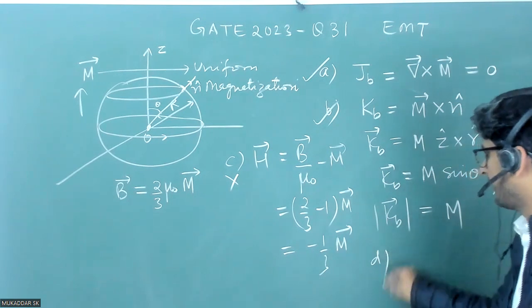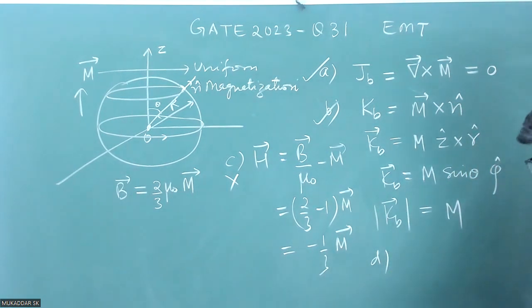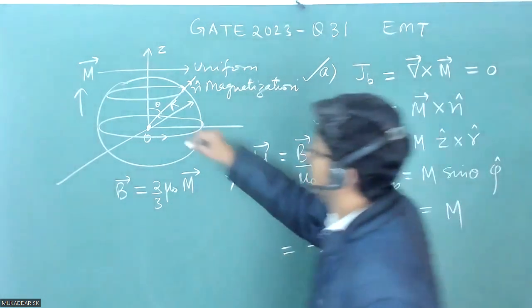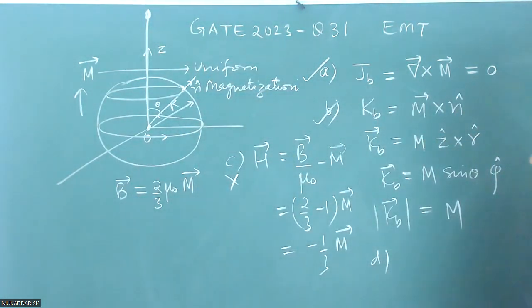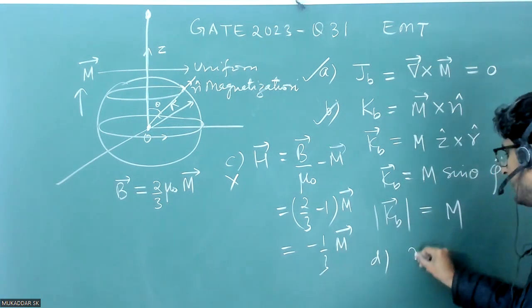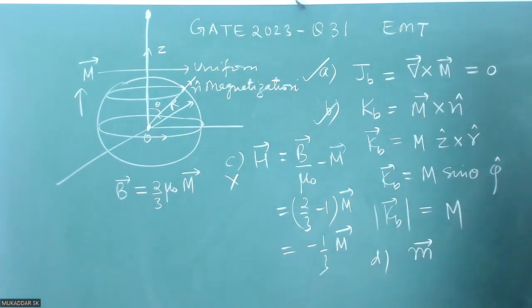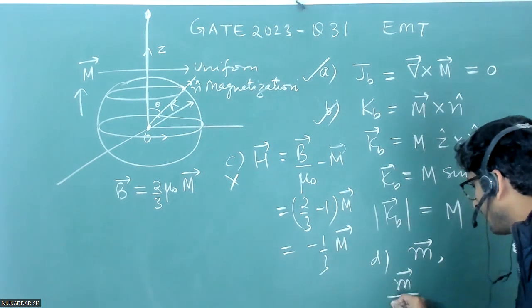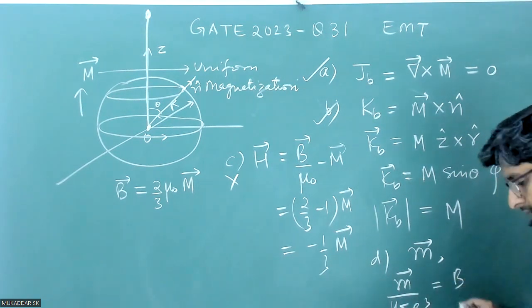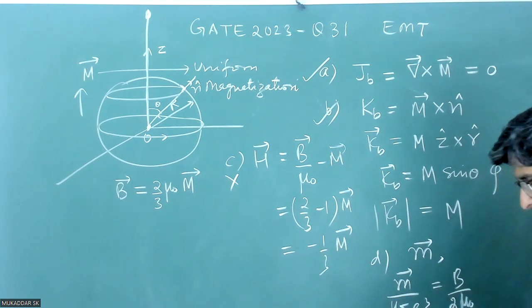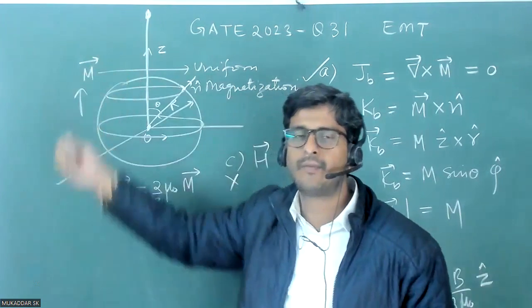In D, they have asked about far from the sphere, the magnetic field is due to dipole moment small M. So if we see far from the sphere somewhere, the magnetic field is due to dipole moment small M. And they have given where M by 4 pi R cubed is equal to B by 2 mu naught. And this is Z cap.